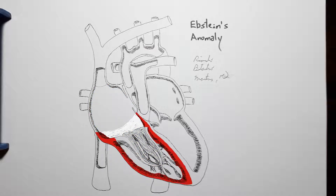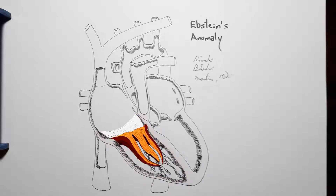That is, a portion that physiologically belongs to the right ventricle, but that due to a displacement of the boundary between the chambers, is now anatomically part of the right atrium.